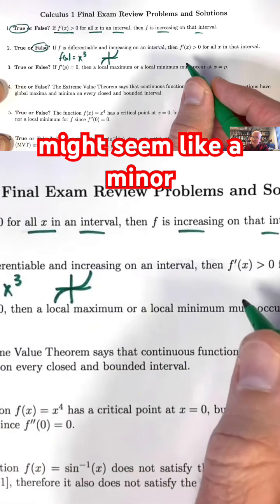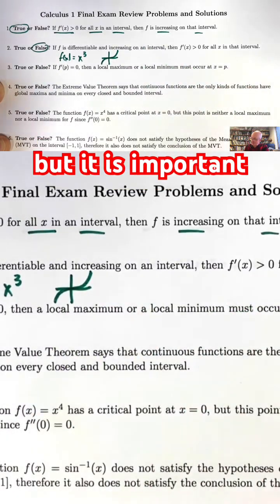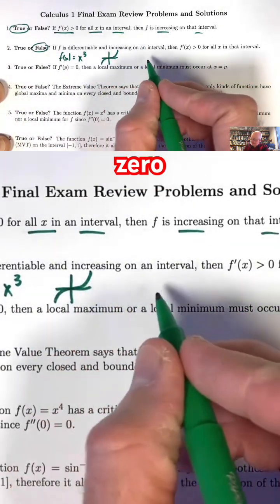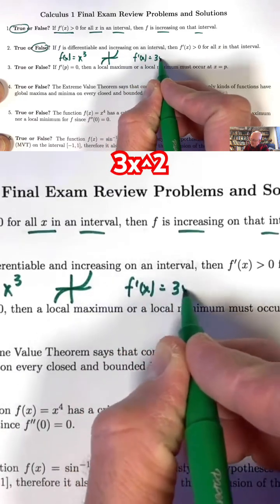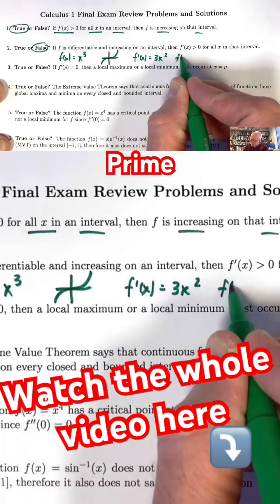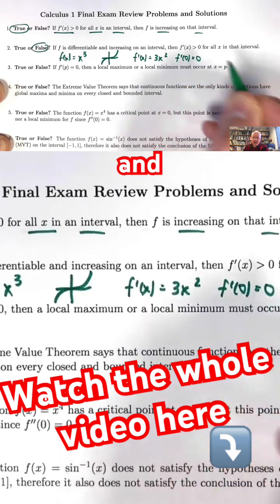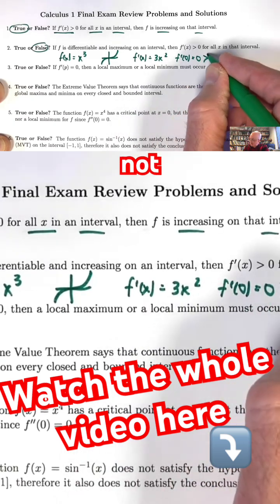However, this might seem like a minor technicality, but it is important. Its derivative at 0 is 0. f'(x) is 3x², so f'(0) is 0, and 0 is not greater than 0.